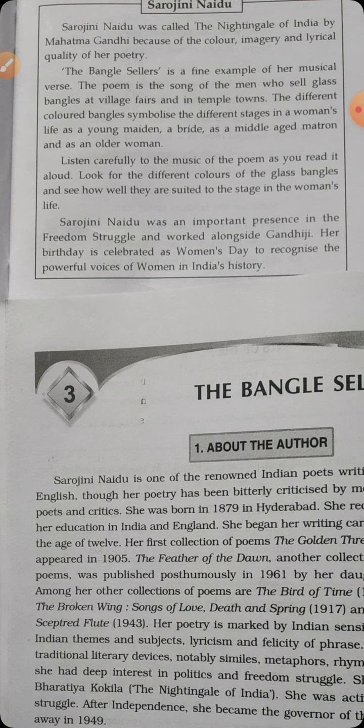The poem is a song of men who sell glass bangles at a village fair in the temple town. The different coloured bangles symbolise different stages of women's life — as a young maiden, a bride, and a middle-aged matron, meaning a married mother or elder woman. As we read aloud, we can look for different colours of the glass bangles and see how well they fit the stages in a woman's life.